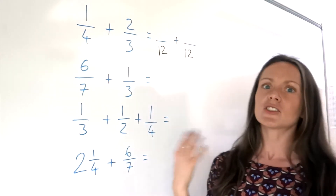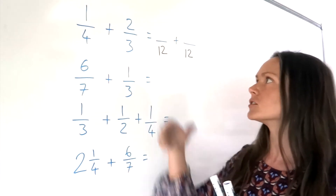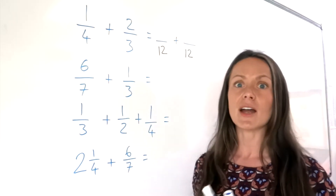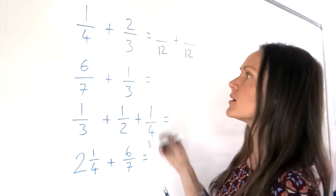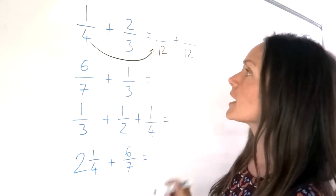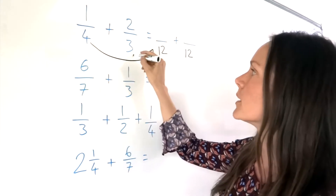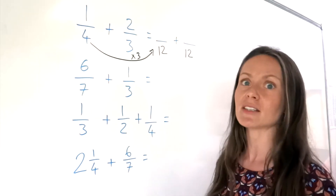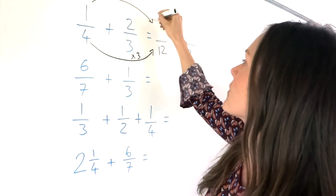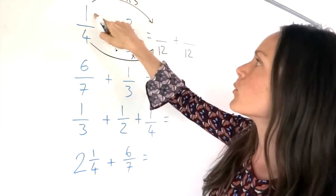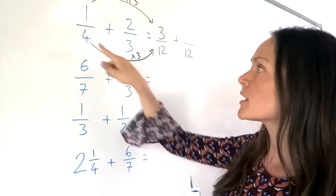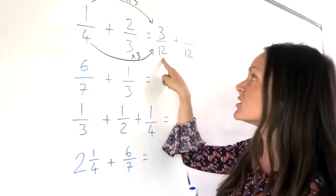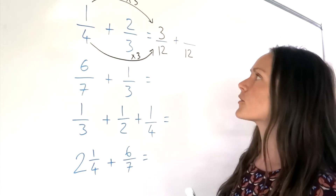We're not allowed to just change the denominator and keep the same numerators on top. We have to change the numerators as well, in order to find what's called the equivalent fraction. So let's look at the first fraction. To get from 4 to 12, I multiplied by 3. So I must do the same thing with the numerator on top — I'm also going to multiply that 1 by 3. So 1 multiplied by 3 is 3. I've found the equivalent fraction of 1 quarter. This is 1 quarter as well, just written in a different format so that we can add the fractions afterwards.